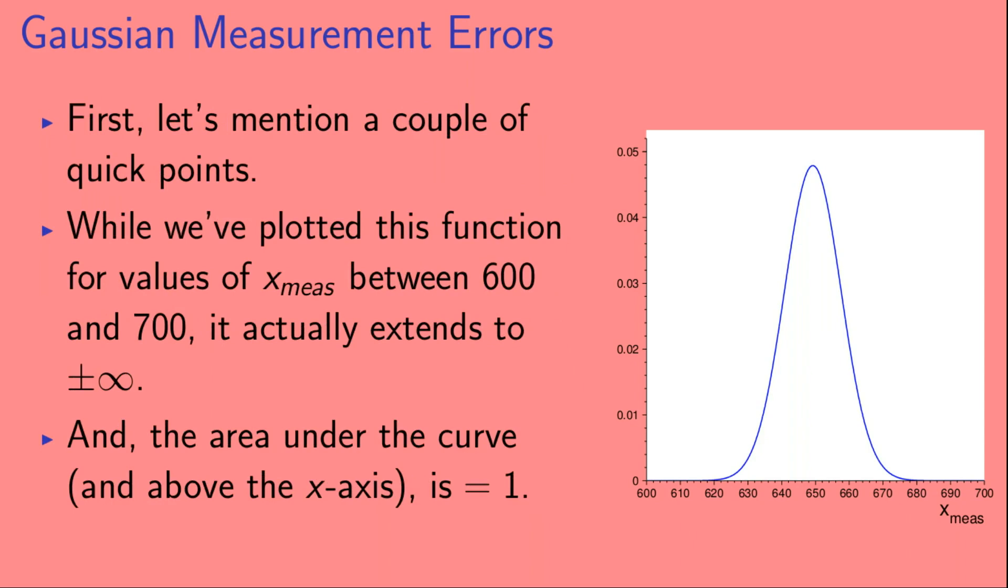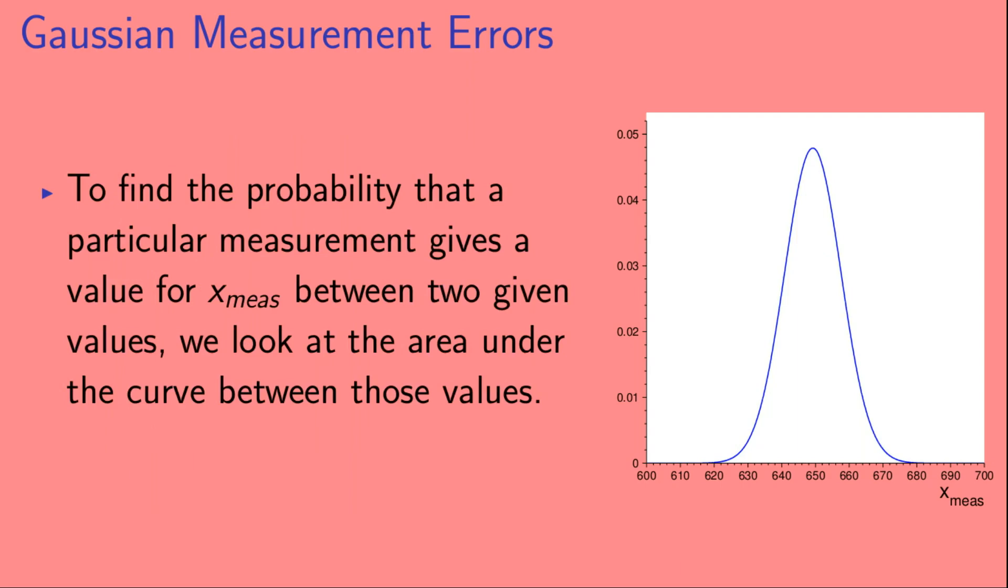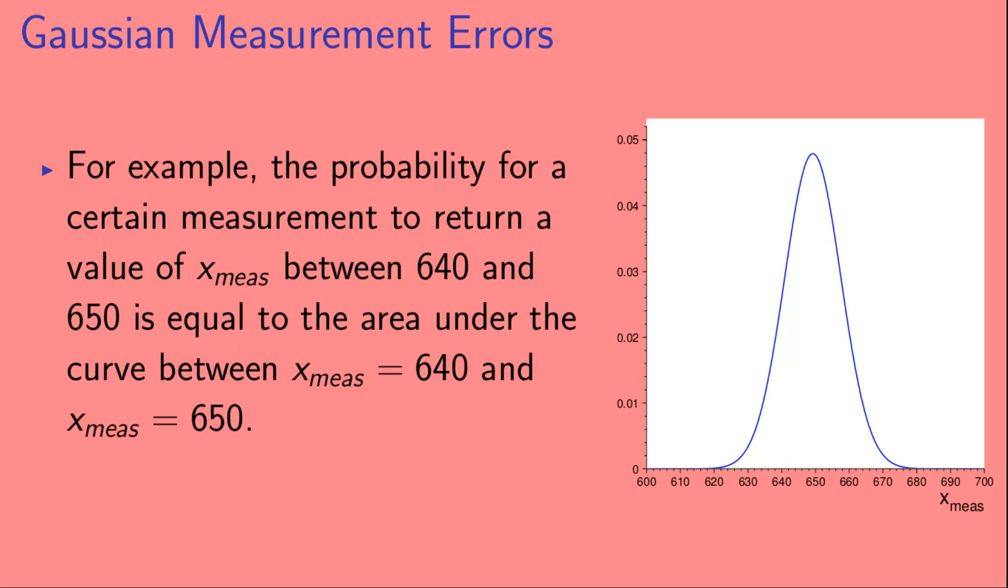Now, first, let's mention a couple of quick points. While we've plotted this function for values of x_meas between 600 and 700, the function actually extends from minus infinity to plus infinity. And the area under the Gaussian curve, and above the x-axis, is equal to 1. To find the probability that a particular measurement gives a value for x_meas between two given values, we look at the area under the curve between those values. For example, the probability for a certain measurement to return a value of x_meas between 640 and 650 is equal to the area under the curve between x_meas equals 640 and x_meas equals 650. Here we show that area in blue.